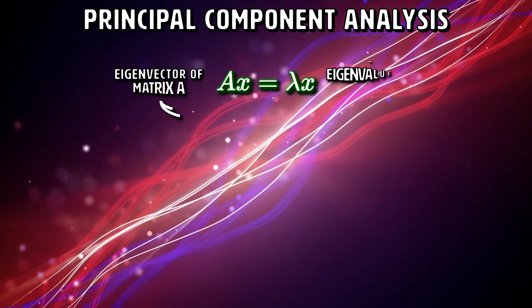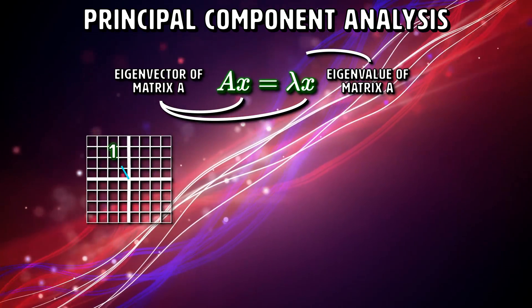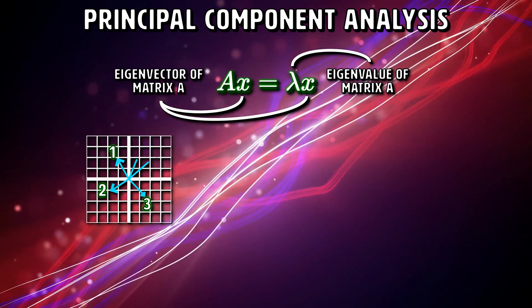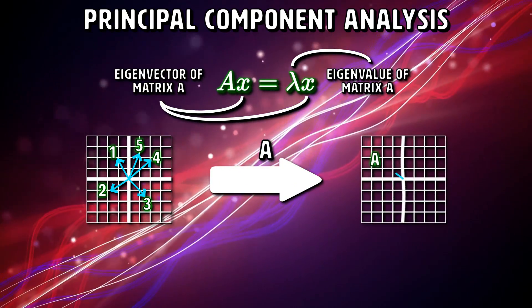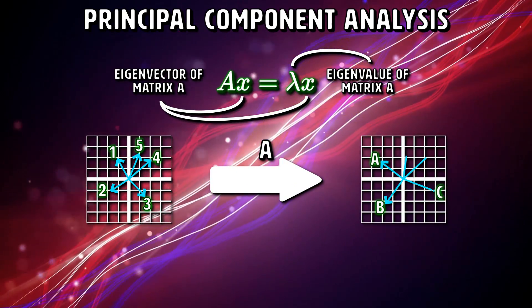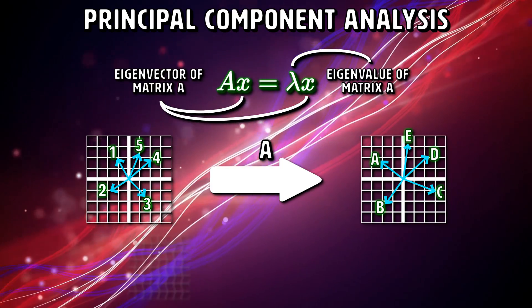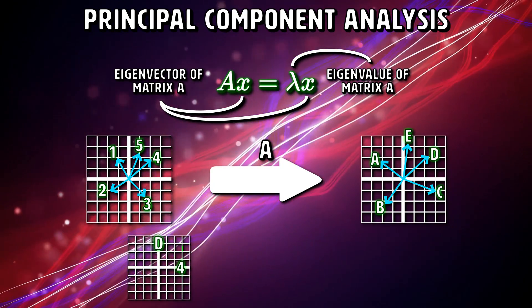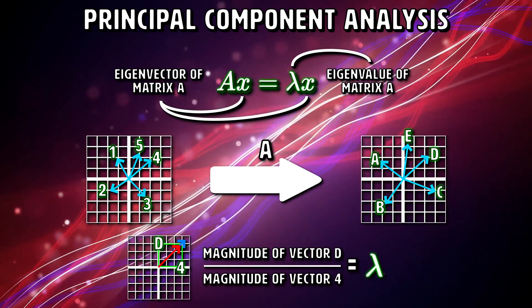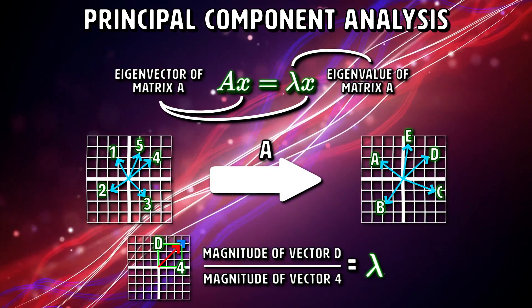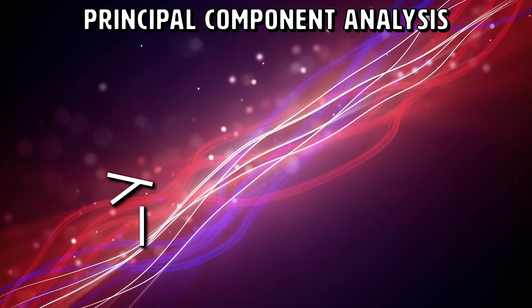To find principal components, we use linear algebra, one of the mathematical pillars of machine learning. Two concepts here, eigenvectors, which have a direction, and eigenvalues, which are numbers that tell us how much variance there is in the data in that direction. These two concepts come in pairs, like yin and yang. And the eigenvector with the highest eigenvalue is the principal component.